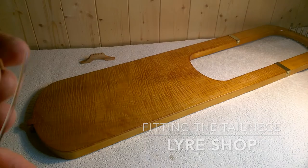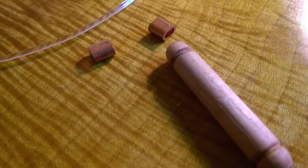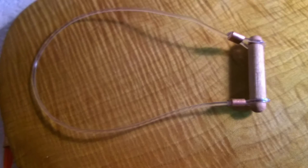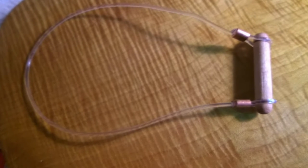I'm going to show you how to fit a tailgut and tailpiece together. This is the kit I sell on Etsy. This works for 6-string lyres, and it also works for 7-string lyres as well.